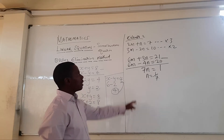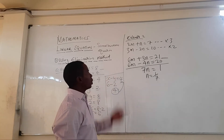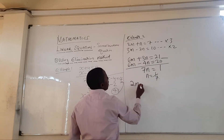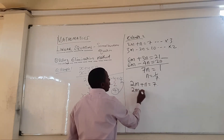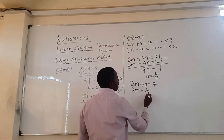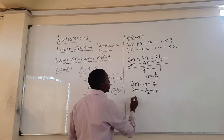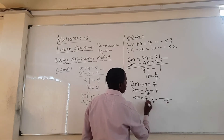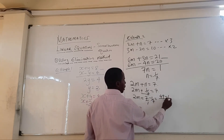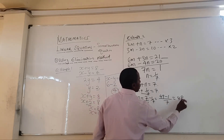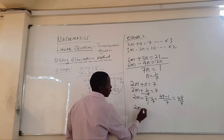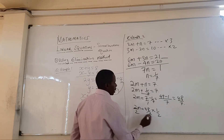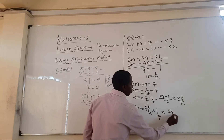Now I take equation 1 — 2m plus n equals 7 — and replace n with 1/7. So 2m plus 1/7 equals 7. Then 2m equals 7 minus 1/7. The LCM is 7, so that gives 2m equals 48/7. Dividing both sides by 2, I get m equals 24/7.